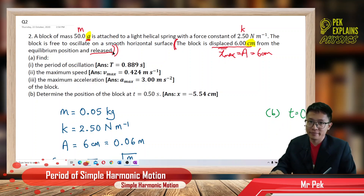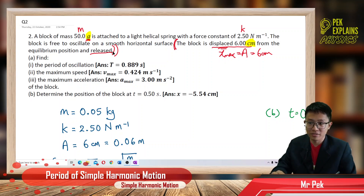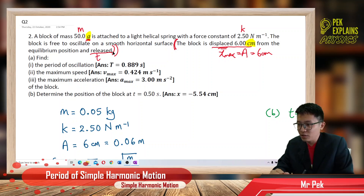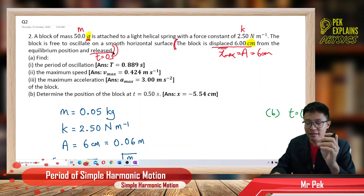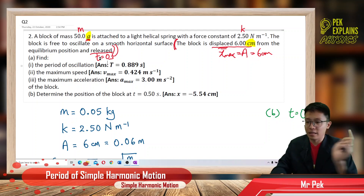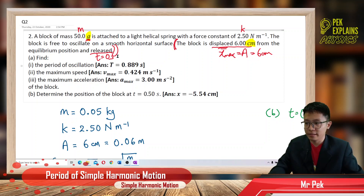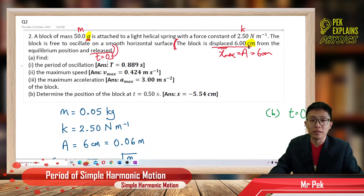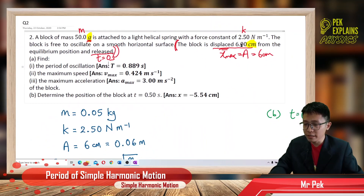Once you release, the time starts because the system starts to oscillate. At zero seconds, the moment you release, the clock starts ticking. So the block is oscillating and this oscillation does not start from the equilibrium position — it starts from the amplitude, the place you displaced it, which is 6 cm.